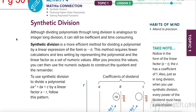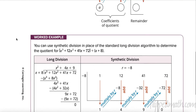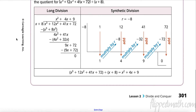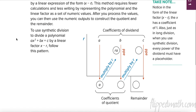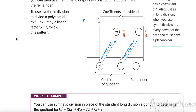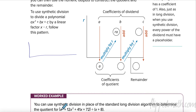This is called synthetic division. I don't want you to do this problem yet — follow along with me. I'm going to draw a line down like this and I'm only going to use the coefficients. I have to use every coefficient, so I need every power: three, two, one, zero.